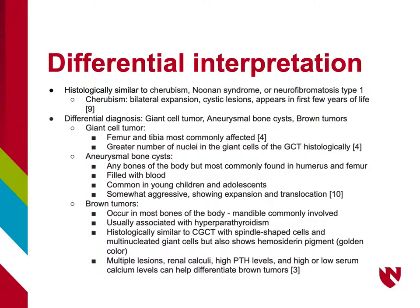Giant Cell Tumors occur most often in the femur and tibia. Histologically, Giant Cell Tumor has a greater number of nuclei in the giant cells than Central Giant Cell Granuloma. Aneurysmal bone cysts can occur in any bone of the body, but the humerus and femur are most commonly affected. These cysts are filled with blood, common in young children and adolescents, and are somewhat aggressive, showing expansion and translocation.